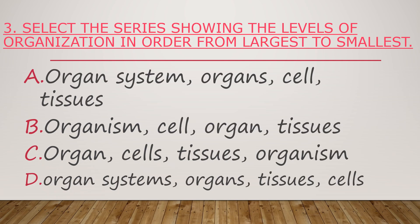Number three. Select the series showing the levels of organization in order from largest to smallest. A. Organ System, Organs, Cell, Tissues. B. Organisms, Organ, and Tissues. C. Organ, Cells, Tissues, Organisms. D. Organ, Organ Systems, Organs, Tissues, and Cells.